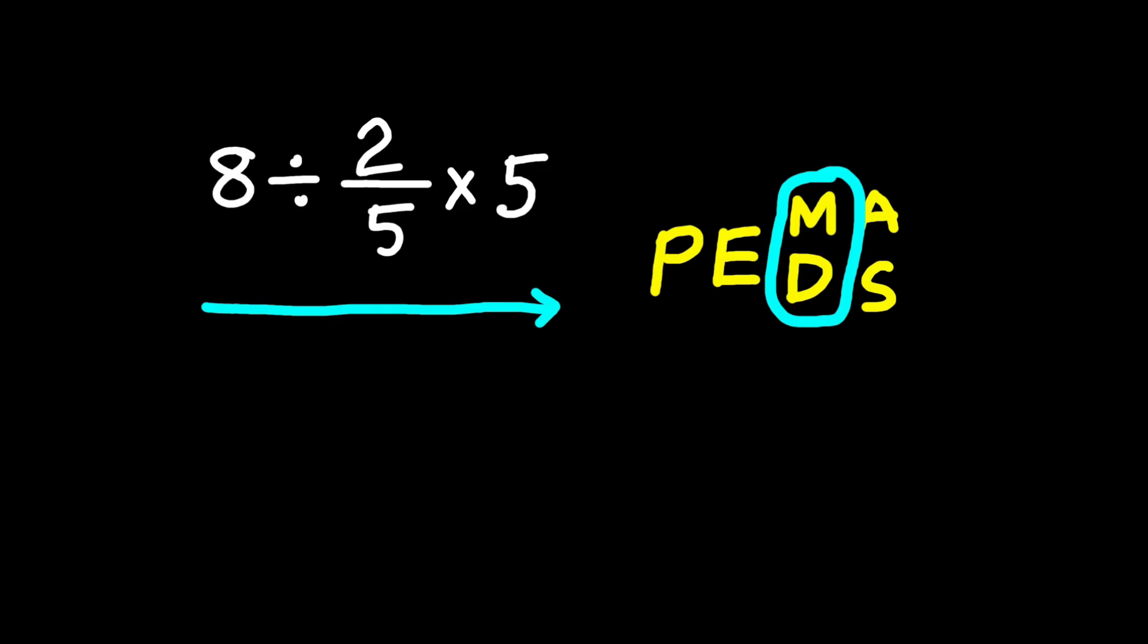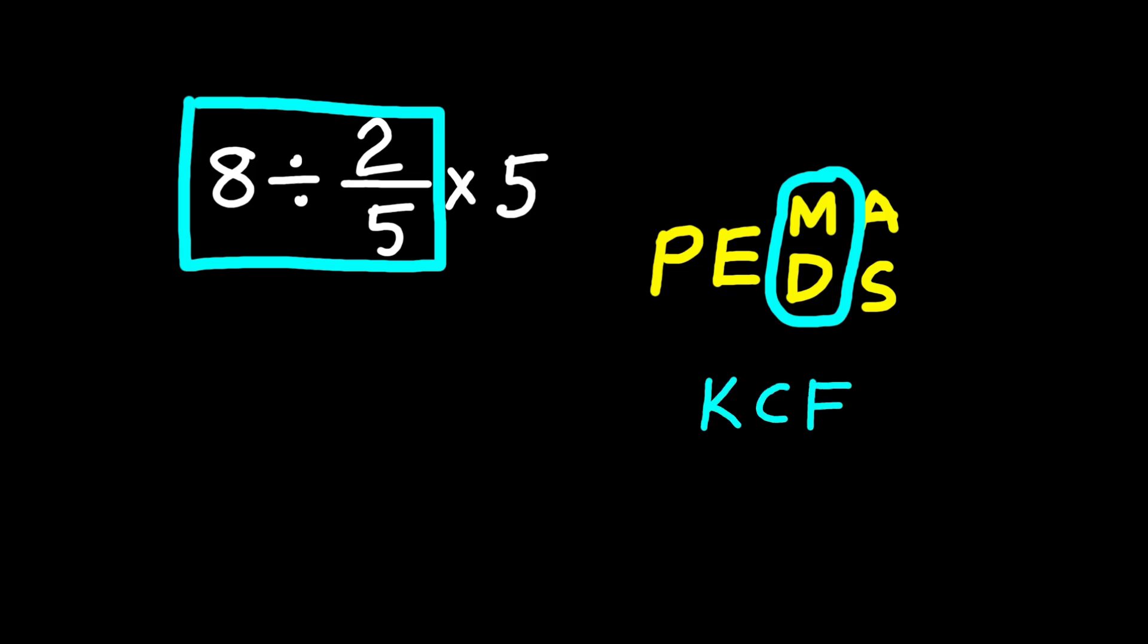Now let's actually do it step by step. We start with 8 divided by 2 over 5. Anytime you divide by a fraction, you use the KCF rule. Keep, change, flip. Keep the 8, change division to multiplication, and flip 2 over 5 into 5 over 2. So 8 divided by 2 over 5 is the same as 8 times 5 over 2.